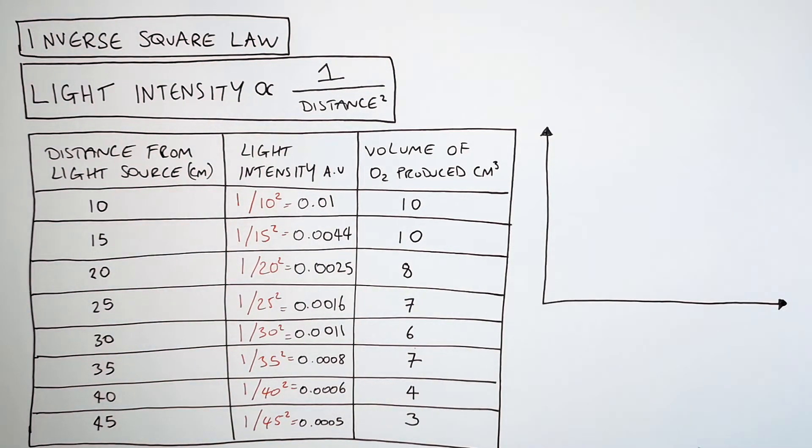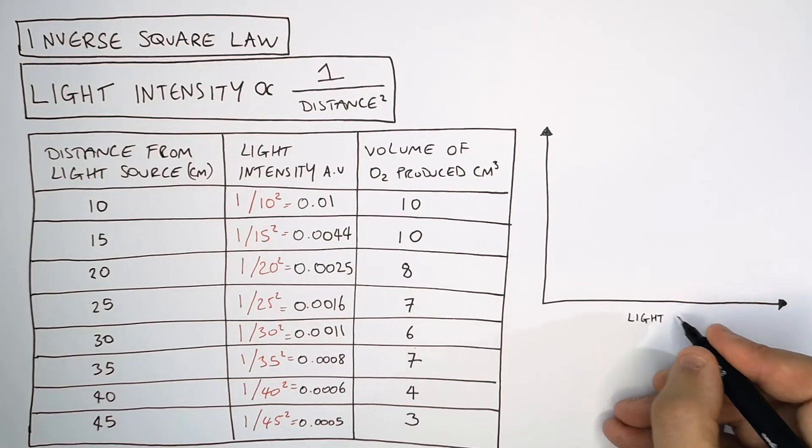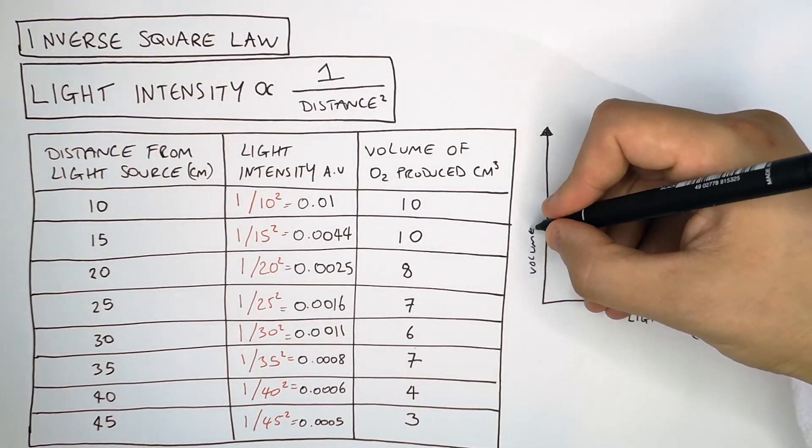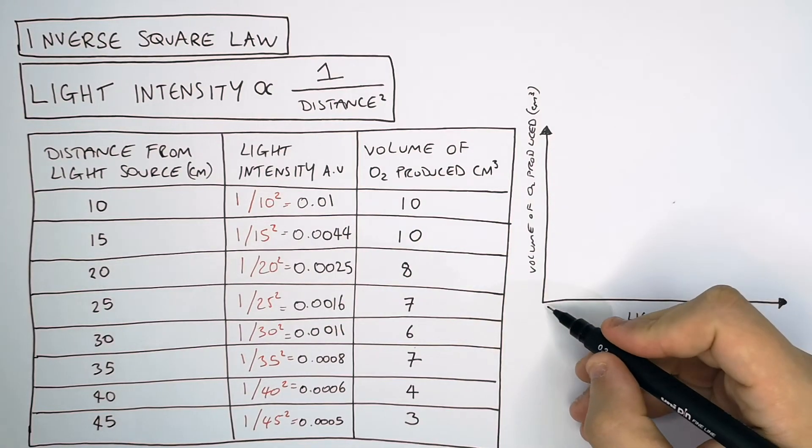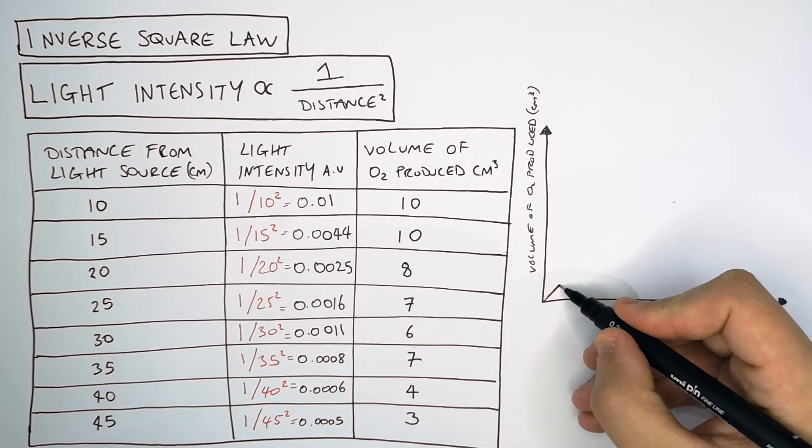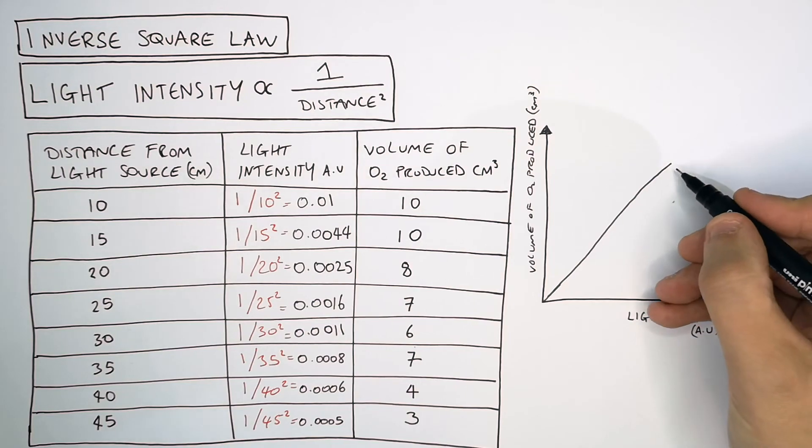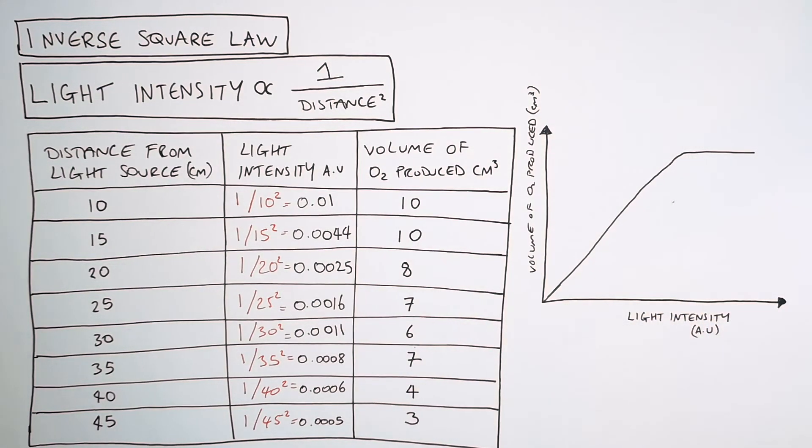And then what you can do is do a graph of light intensity against volume of oxygen produced, whereby the volume of oxygen produced is an indicator for the rate of photosynthesis. And your graph should look like this if you have done enough distances away from the light source. Watch my video on limiting factors to have an insight into the reason why this graph looks the way it does.